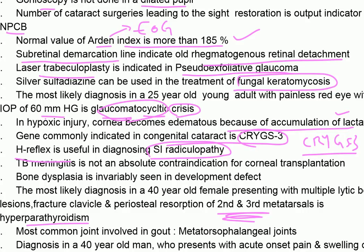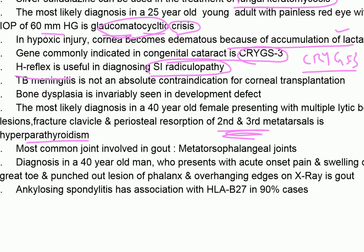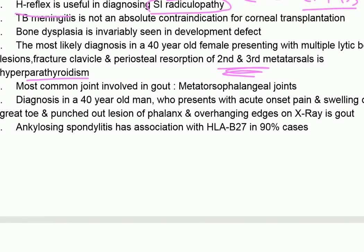The most common joint involved in gout is the metatarsophalangeal (MTP) joint. A 40-year-old male with acute onset pain and swelling of the left great toe, punched-out lesion of the phalanx, and overhanging edges on X-ray — diagnosis is gout.